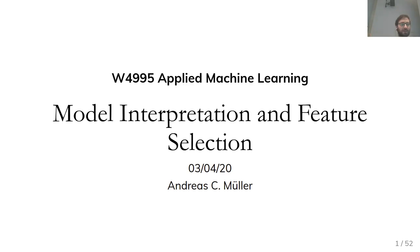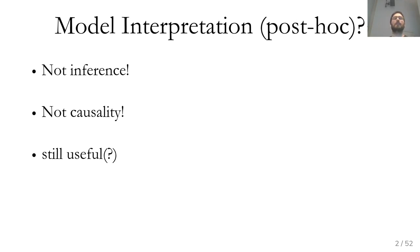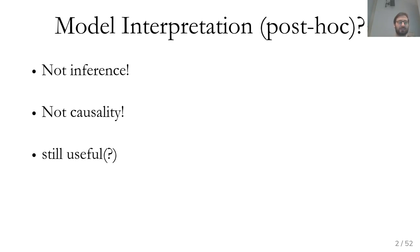Let's talk about model interpretation and feature selection. Today I'll only cover what's known as post hoc explainability or model interpretation, where basically you have more or less a black box model and you're trying to interpret what this model does. We'll also talk a little bit about interpreting linear models, but mostly I will talk about black box models. There's also another line of work about how we can build models that are interpretable, but we're not going to have a lecture on that.